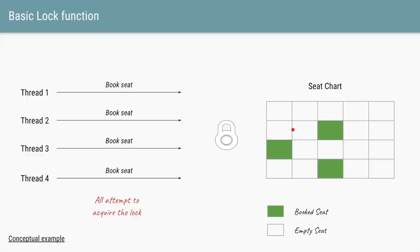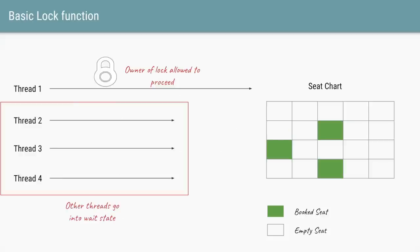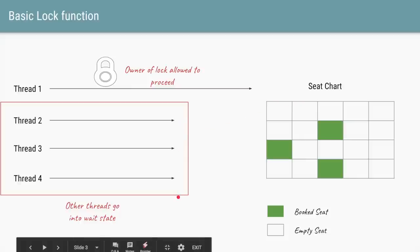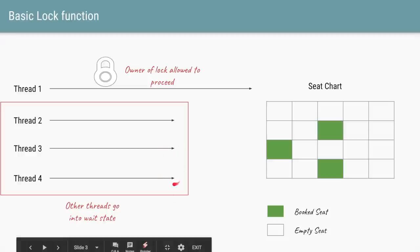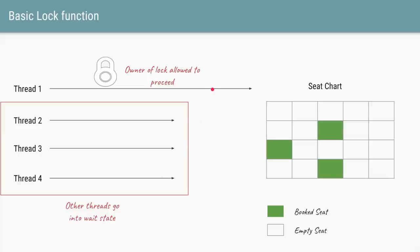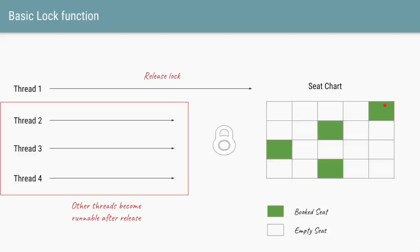Let's say thread one was able to acquire the lock. Thread one is the owner of the lock and it's allowed to proceed and book a particular seat. Since the other three threads also wanted to get access to that lock and the lock is currently not in their possession, these three threads will go into the wait state. Thread one, which is the owner, will book the seat and will release the lock.